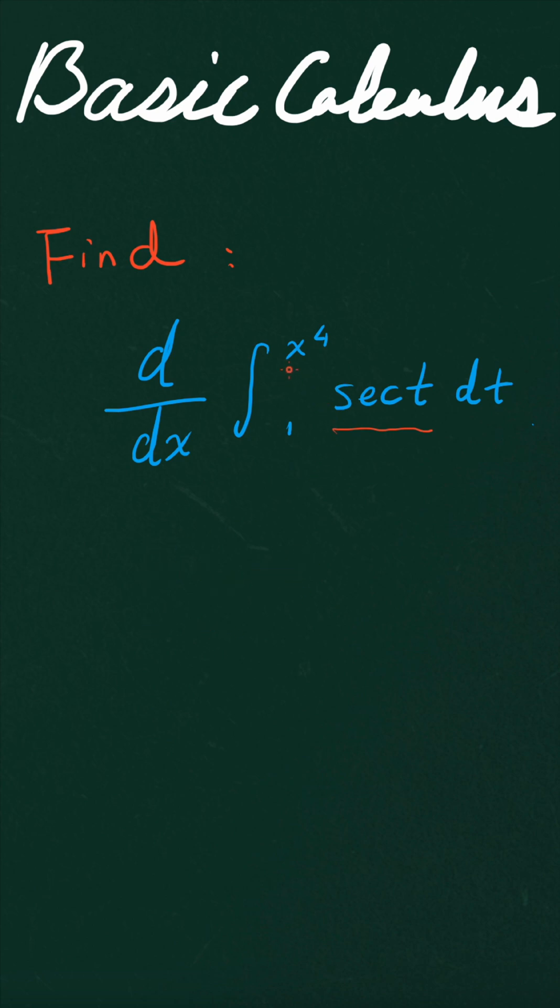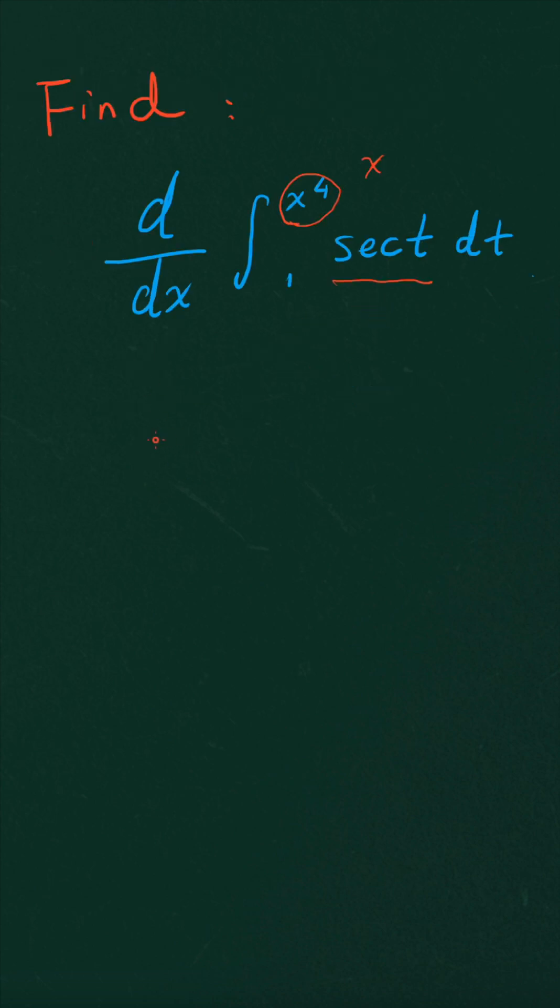Because basically you have x raised to the power of 4 instead of x over here. So the fundamental theorem of calculus 1 says this: when you have g(x), which is equal to the integral from a to x, remember x, not other things, of the function f(t) with respect to the variable of t, then you have this relationship, the derivative of g(x) is equal to f(x).